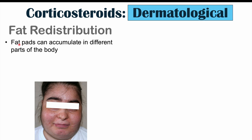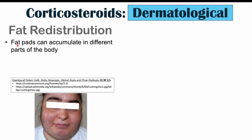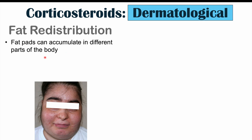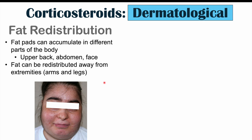Now let's discuss the dermatological effects of corticosteroid use. One of them is fat redistribution. Fat pads can accumulate in different parts of the body, with classic locations including the upper back, abdomen, and face — resulting in a rounded face and a fat lump on the back. Fat is redistributed away from the extremities, so the arms and legs become thinner while more fat accumulates in the face, back, and abdomen. The fat essentially centralizes.